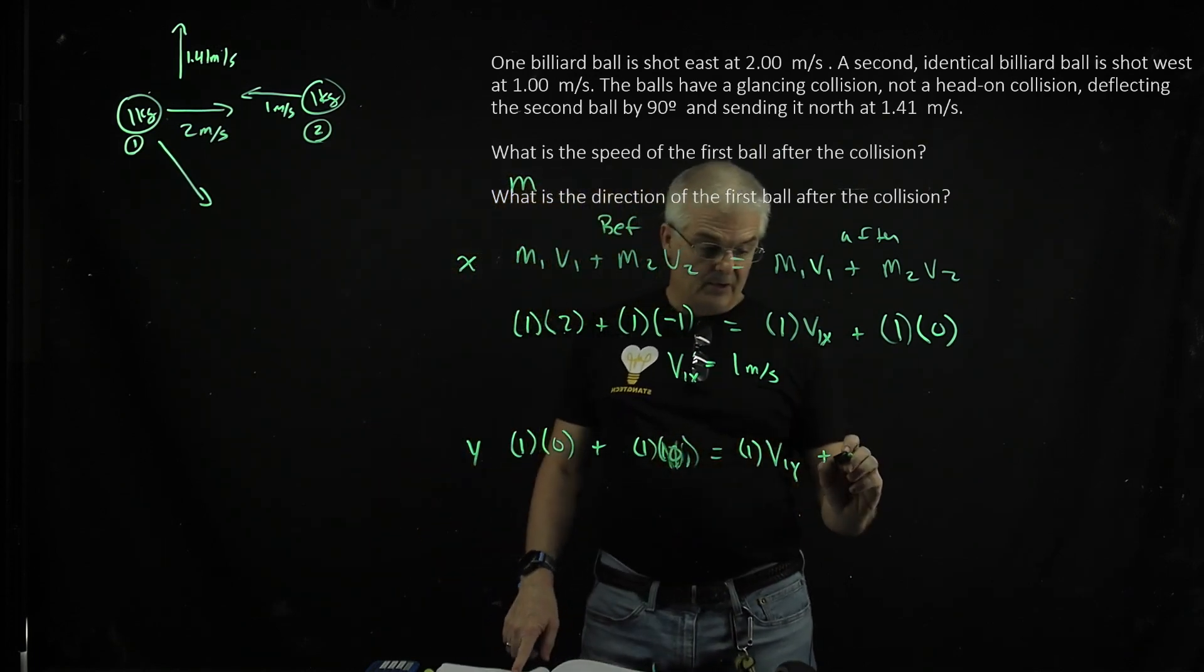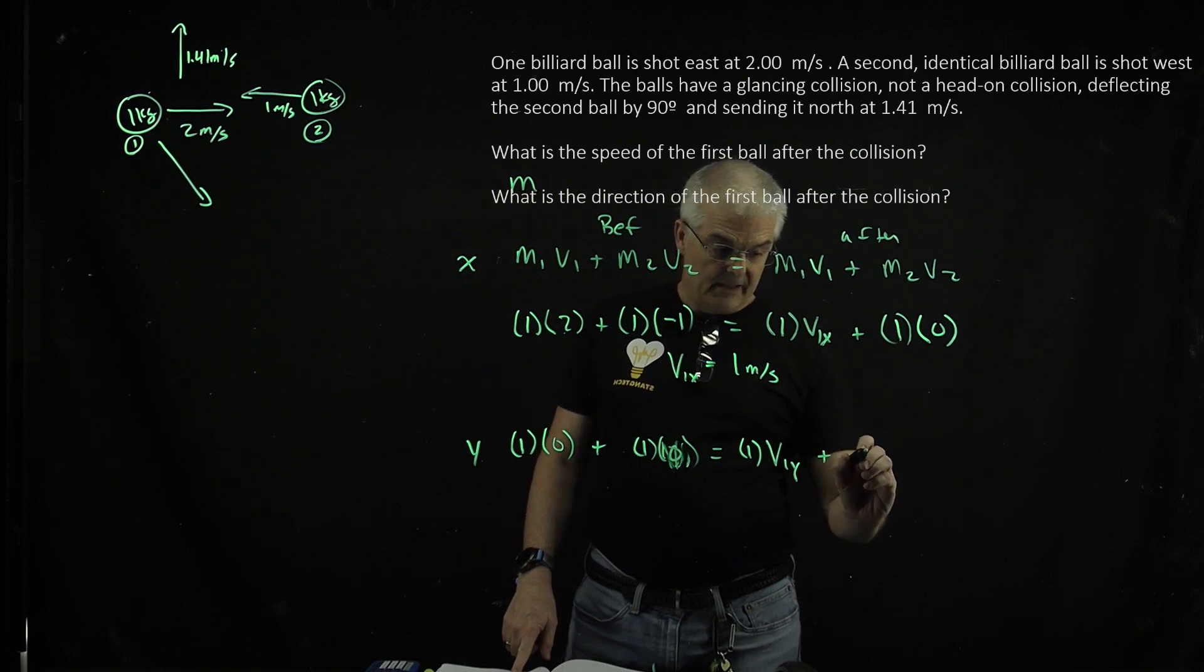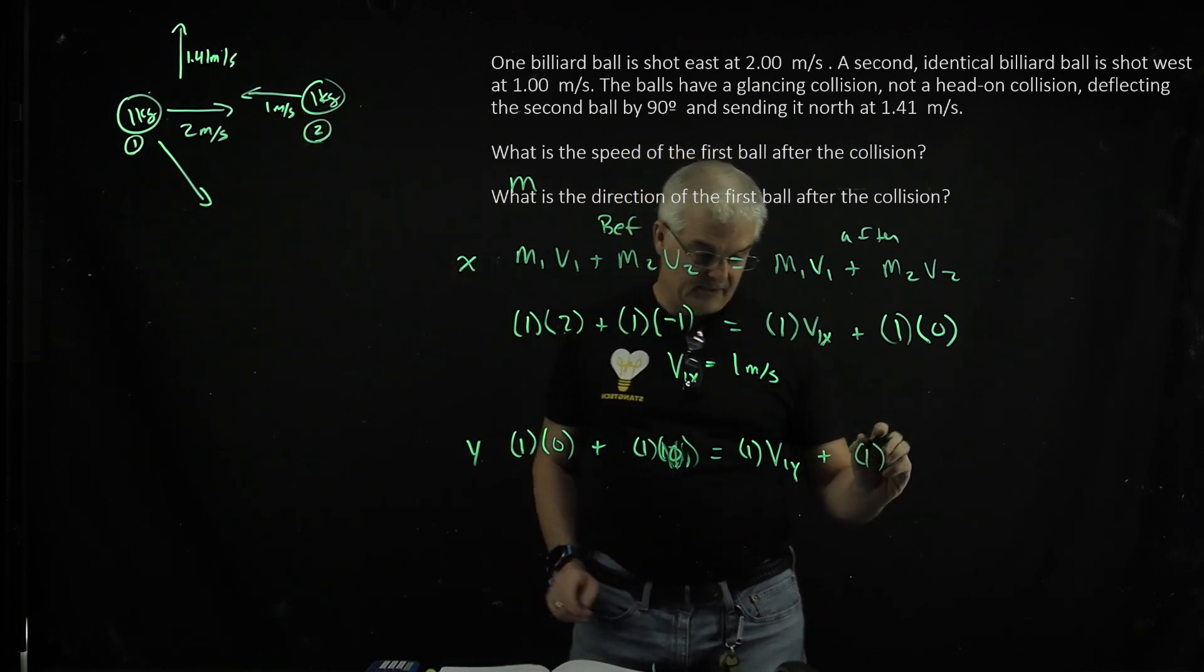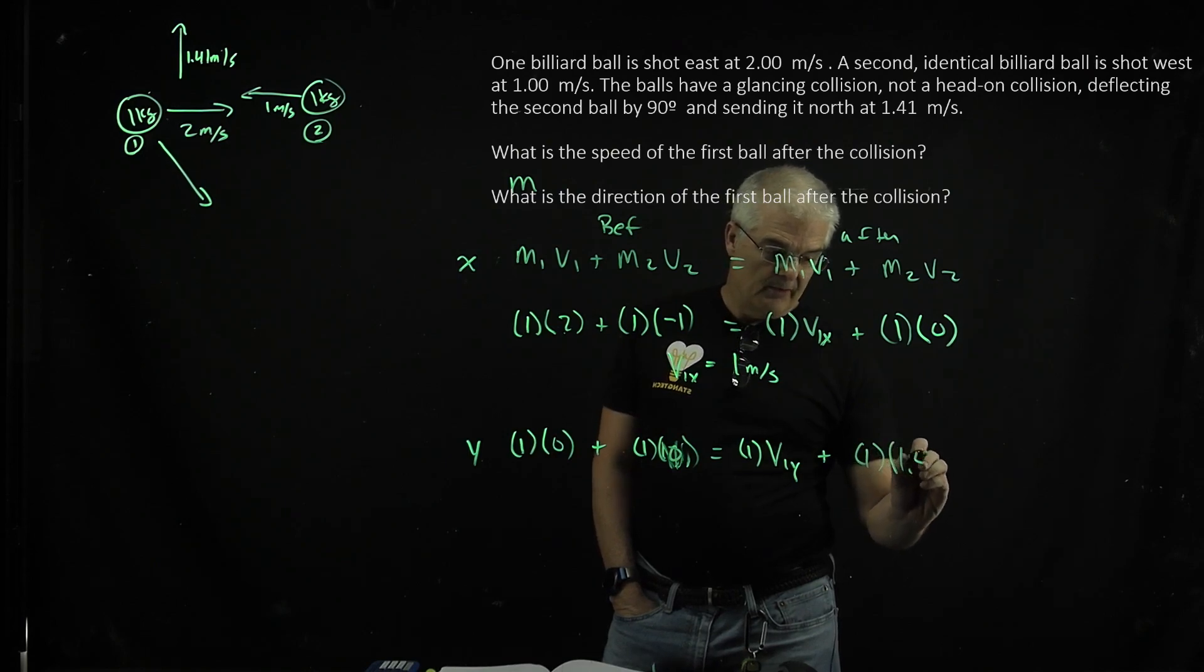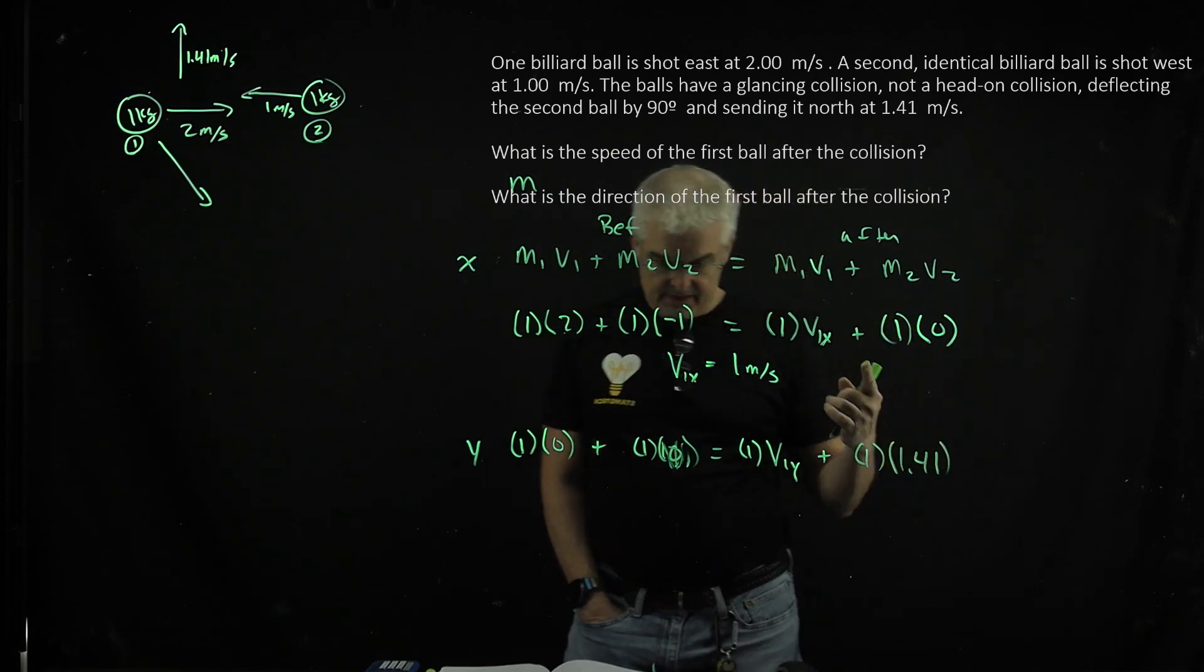But, we do know that we've got a 1, the ball afterwards, that's ball 2, at the end of the experiment, has a speed of 1.41, positive. So now, with this equation...